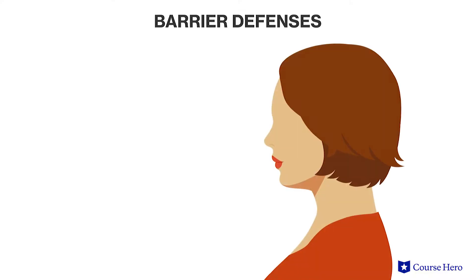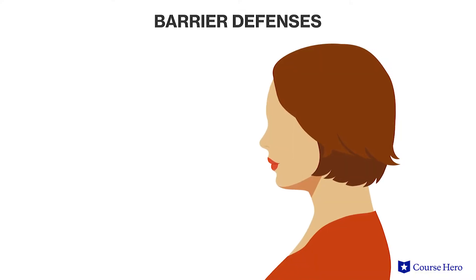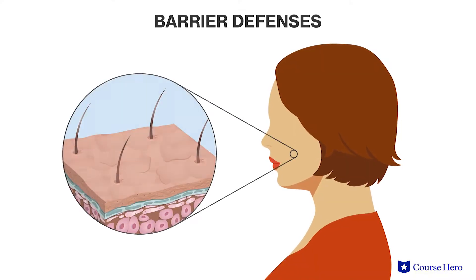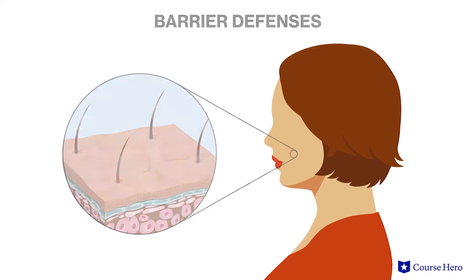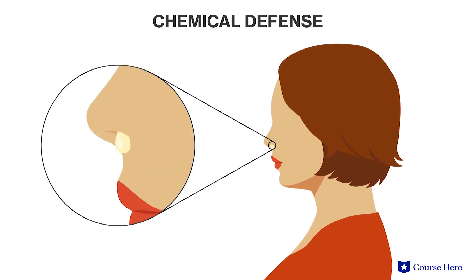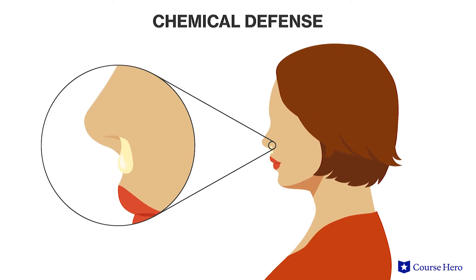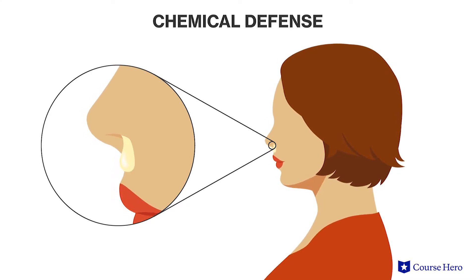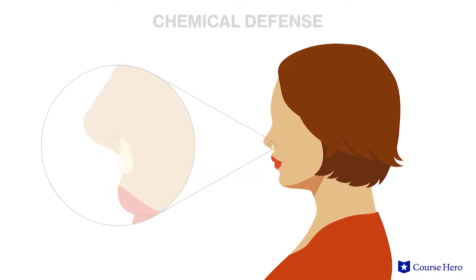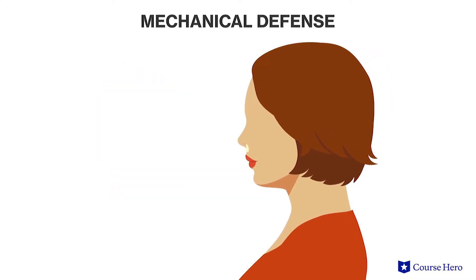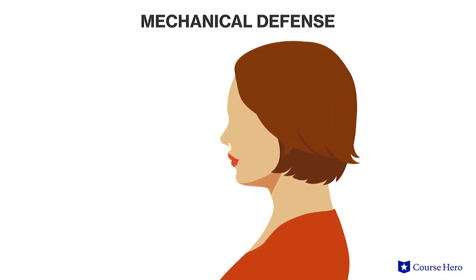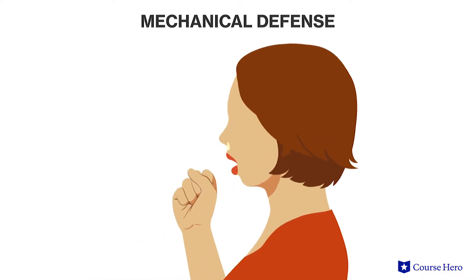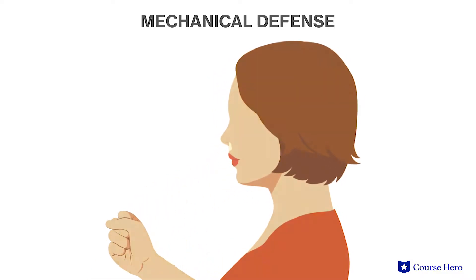A physical barrier would be the skin, which functions to keep foreign objects outside of the body. The mucus found in body openings constitutes a chemical defense, and the movement of foreign objects out of the body through ciliary action or coughing and sneezing are examples of mechanical defense.